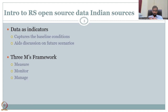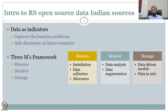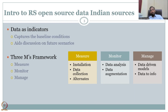You can use models to predict, or equations, assumptions, and visualizations. In this case, the three M's are: you measure, you monitor, and then you manage. Measuring requires installation, data collection, and alternates — the alternate data we're going to use is remote sensing data, and monitoring can also be done for data analysis. You convert your data into information, which helps in management.